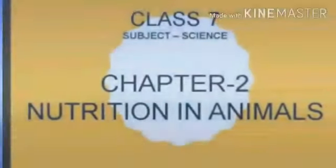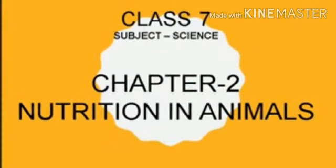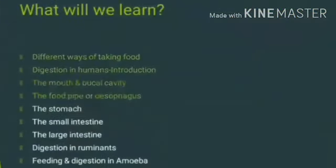In the last class, we discussed the first chapter, that is nutrition in plants. So today, in this video, we are discussing the second chapter, that is nutrition in animals. In this chapter, we will discuss different ways of taking food, digestion in humans — the mouth, buccal cavity, food pipe or esophagus, stomach, small intestine, large intestine — digestion in ruminants such as cow or goat, and finally feeding and digestion in amoeba.